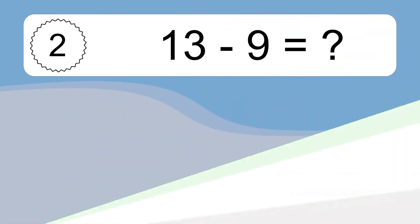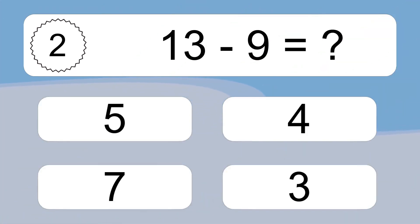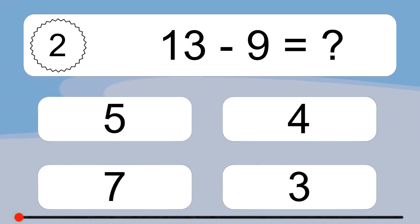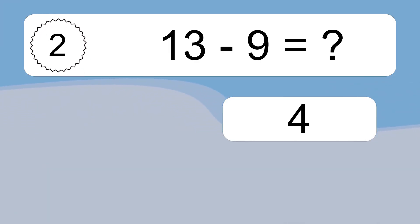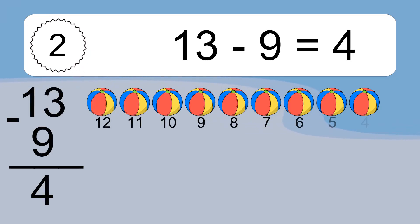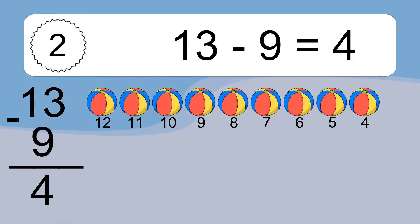13 minus 9 equals what? 13 minus 9 equals 4. Let's count it. 12, 11, 10, 9, 8, 7, 6, 5, 4.